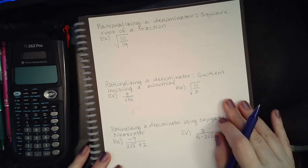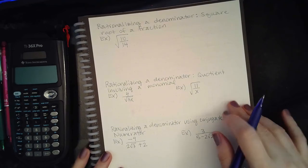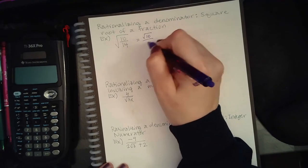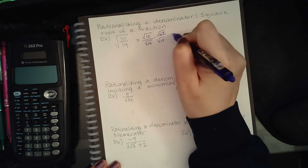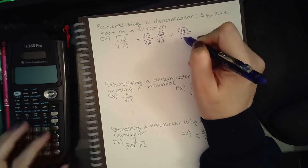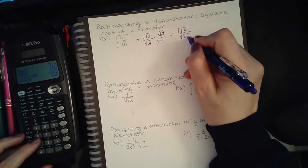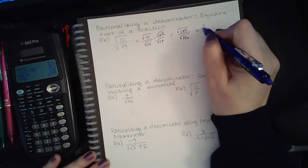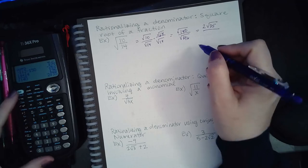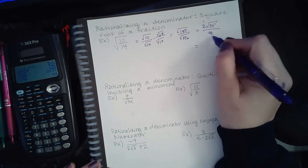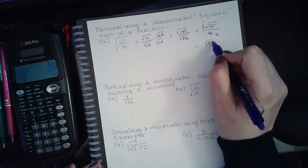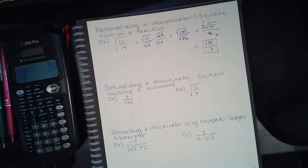Rationalizing a denominator when you have the square root of a fraction: you can separate it and use the same strategy as before. Square root of 14 times square root of 14 gives square root of 196. Square root of 140 is 2 square root of 35, and square root of 196 is 14. The outside numbers reduce: 2 goes into 2 once, 2 goes into 14 seven times. You get square root of 35 over 7. You cannot reduce the 35 and the 7 because 7 is not inside the square root and 35 is, making them different kinds of terms.